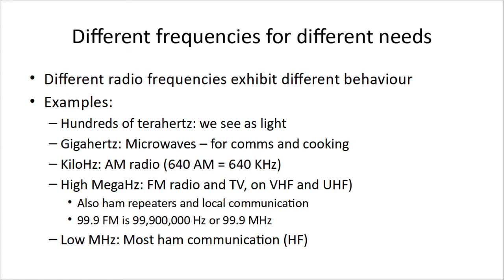Down at the kilohertz we have AM radio, and in the high megahertz we've got FM radio and TV on VHF and UHF, and also ham repeaters in those frequencies. But the low megahertz is where HF communication happens, where we're able to get signals around the world.